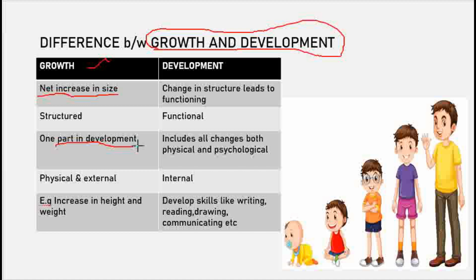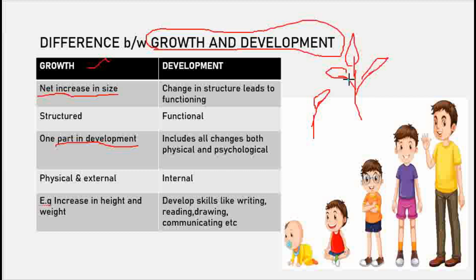Growth is physical and external — we can observe it from outside. For example, a plant growing into a tree, then producing flowers and fruits — that physical increase we see externally is growth. Development, on the other hand, is internal. Psychological changes happen internally, and that is development.